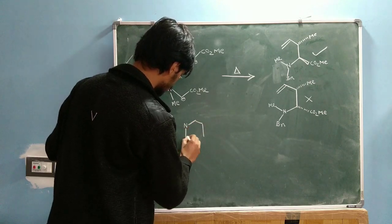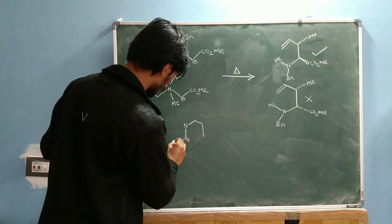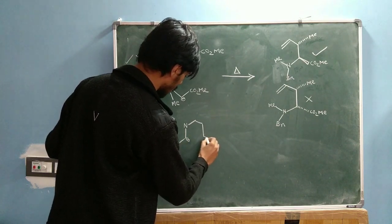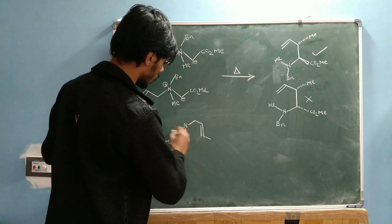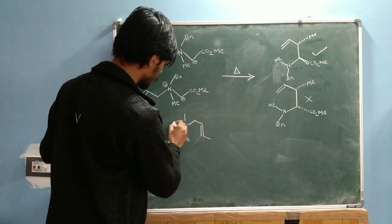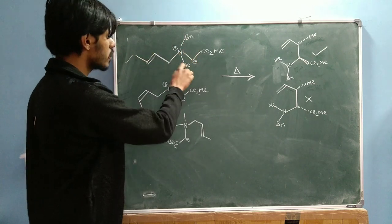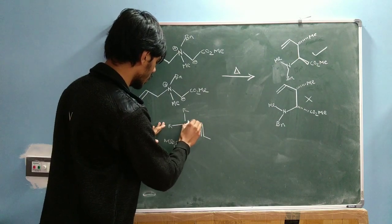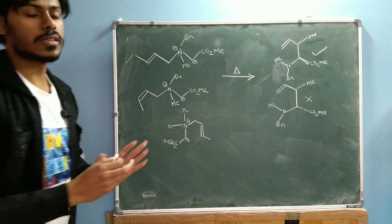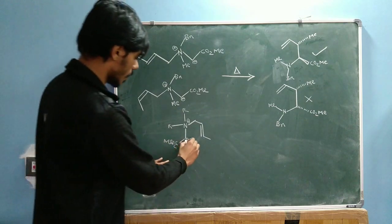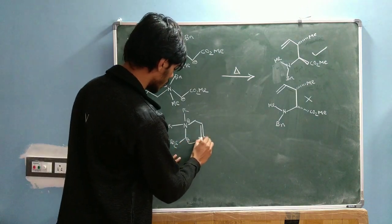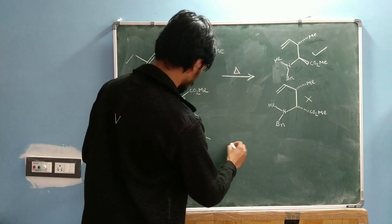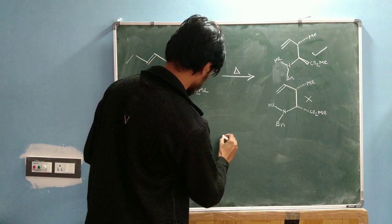I'm writing the same thing but in a different representation. It's a trans double bond, so I write it like this. The two groups — one is benzyl, one is methyl — I just label as R. There is a positive charge on nitrogen. This is the same structure rewritten, and now the negative charge will go here, this double bond will shift here, and this bond will break.